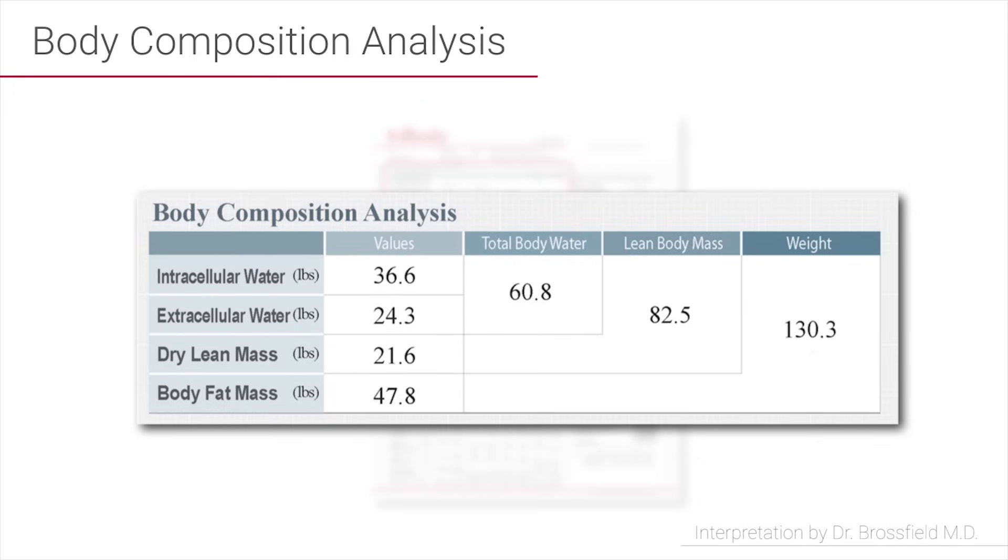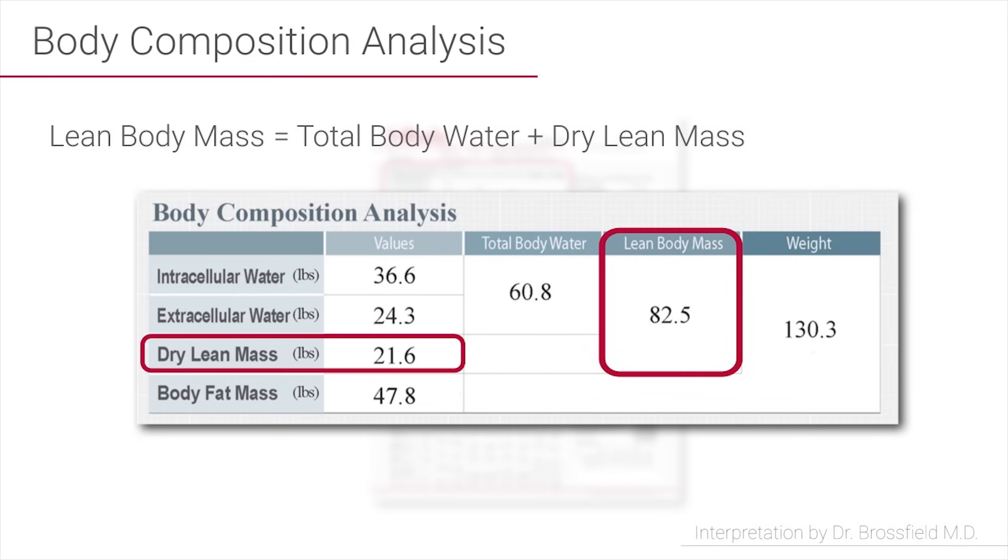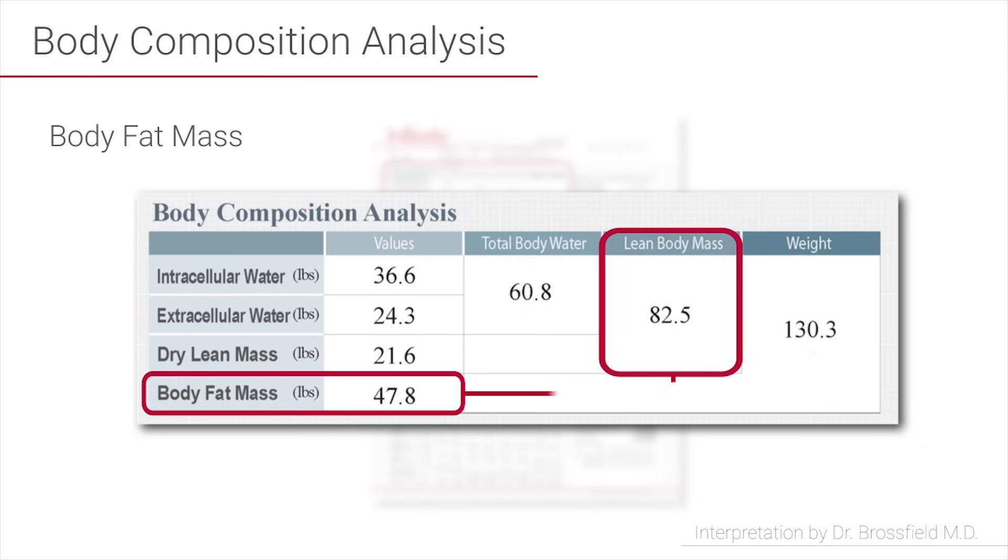The next line says dry lean mass—that's your bone. So if you add your muscle and your bone, you get your lean body mass, and you can see that at the top of this segment. Your lean body mass is essentially all of your body except for fat. So if you add the last line, which is your body fat mass, you get your total weight on the right of this section.